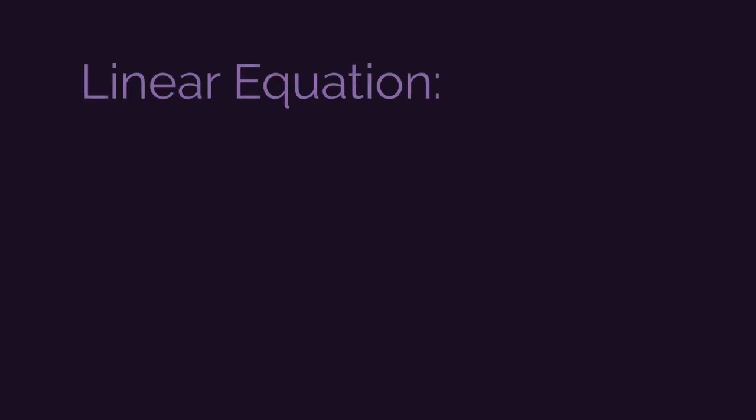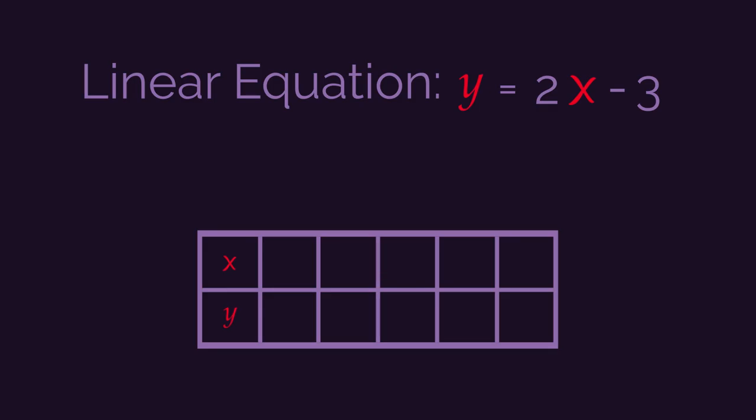So we have this linear equation y equals 2x minus 3, but how do we plot it? It is actually really easy to do. So draw yourself a table of values like this and then we just need to substitute in some different values of x into the equation.